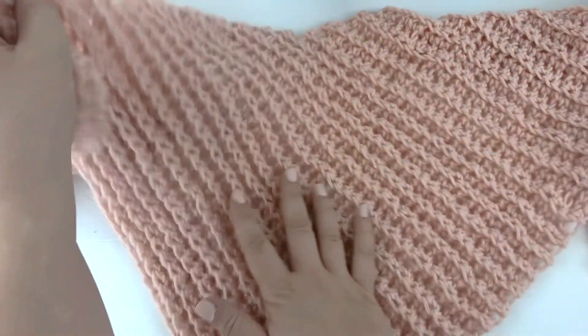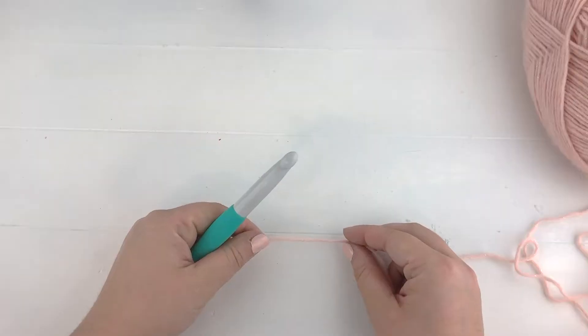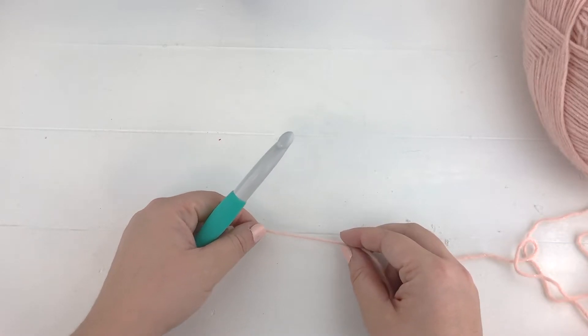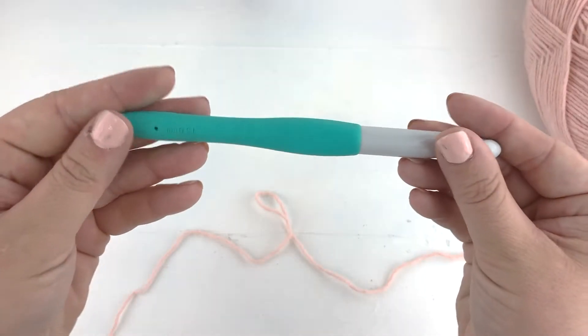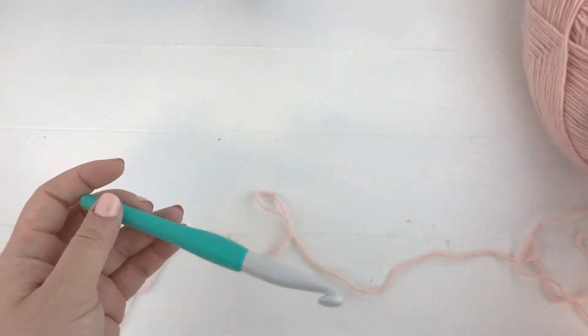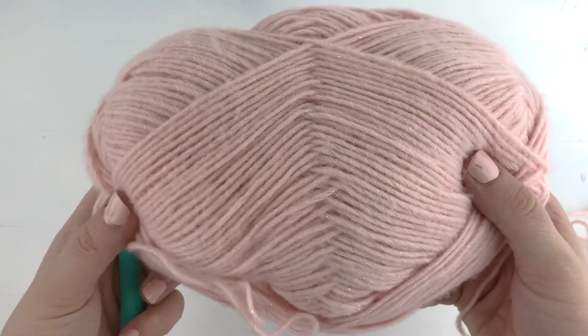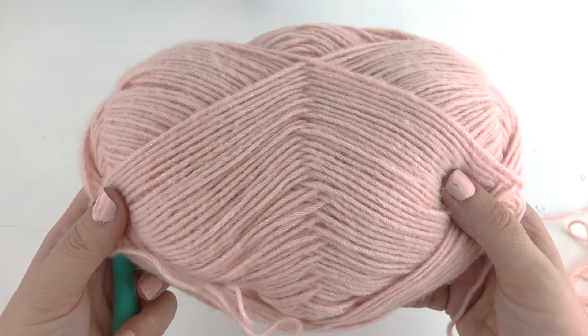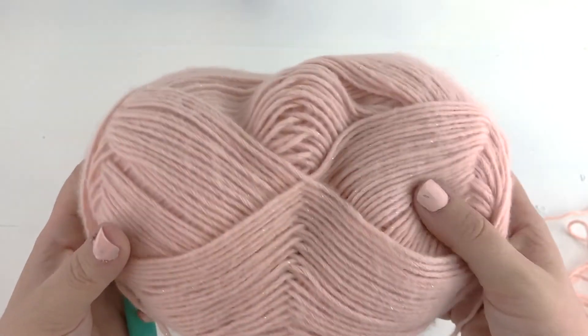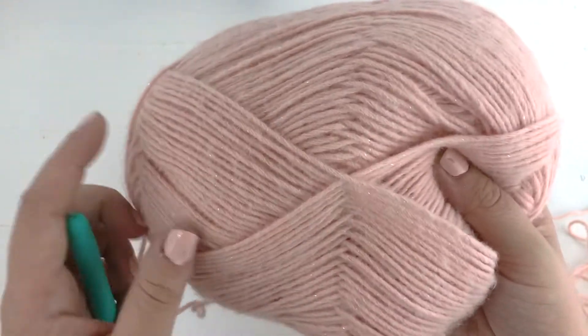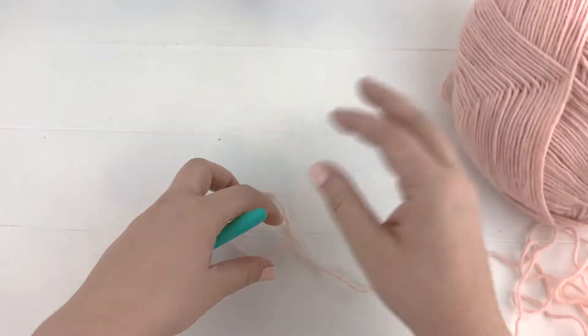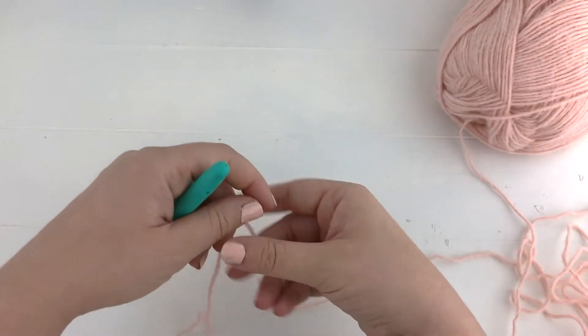To get started you will need a 12 millimeter crochet hook and approximately three ounces of Red Heart High Charm. I am using the colorway called Meteor, or roughly 186 yards. I really like the dusty rose color of this yarn as well as it has just a little bit of sparkle to it.